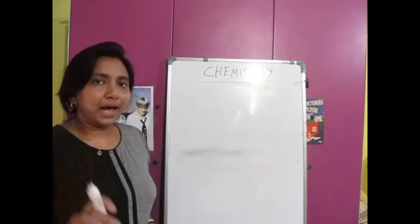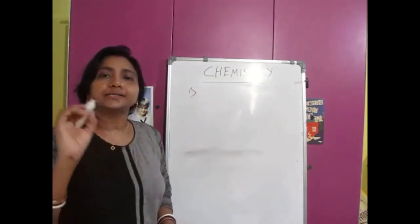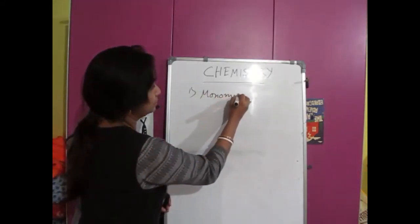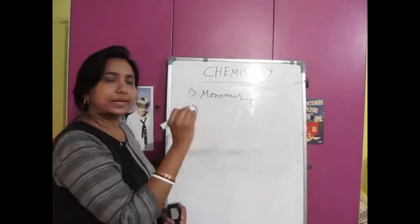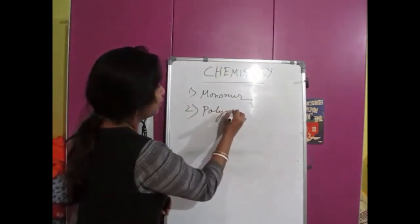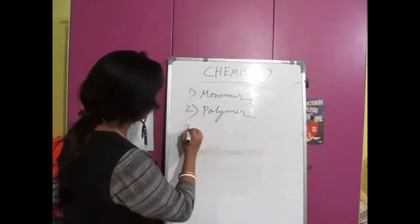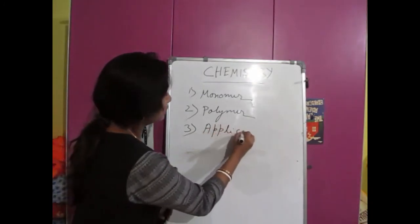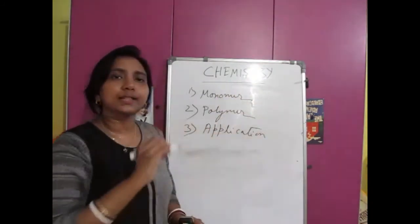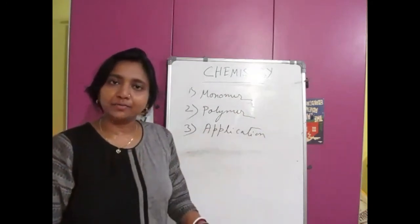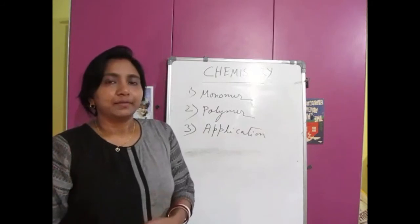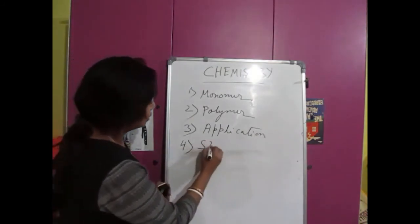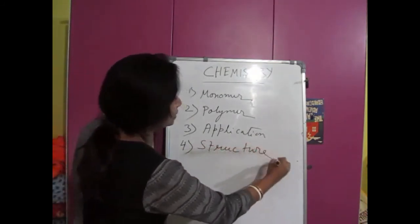What have you learned today? Let me summarize. Number 1, you have learned what is monomer. Number 2, you have learned what is polymer. Number 3, you have learned the different applications of the polymer — not only in the field of our daily life but also in many engineering fields. Number 4, you have learned to write the structure of the polymers.